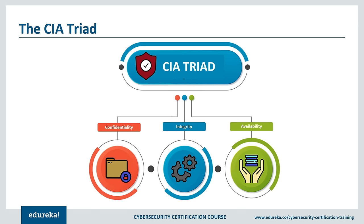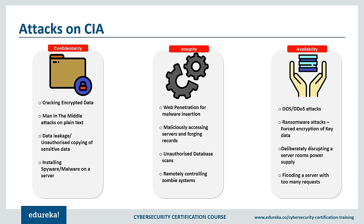The CIA Triad is commonly referred to as the three pillars of security, and most security policies of organizations are based on these three principles. First on the list, we have confidentiality. Confidentiality is roughly equivalent to privacy — measures undertaken to ensure confidentiality are designed to prevent sensitive information from reaching the wrong people while making sure the right people can access it. Access must be restricted to those authorized to view the data in question. It's also common for data to be categorized according to the amount and type of damage that could be done should it fall into unintended hands.